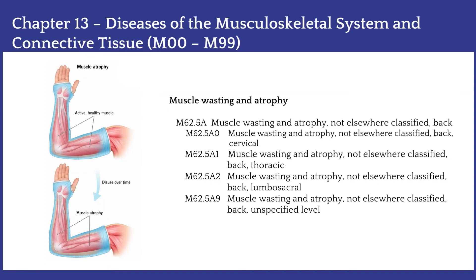The next set of codes from chapter 13, Diseases of the Musculoskeletal System and Connective Tissue, are for muscle wasting and atrophy. This condition now has four codes describing different locations of the atrophy such as cervical, thoracic, lumbosacral and unspecified levels.